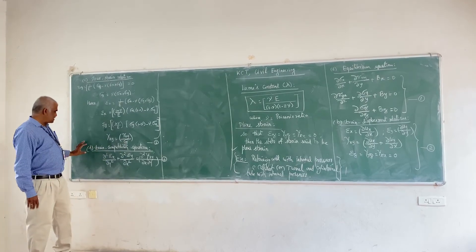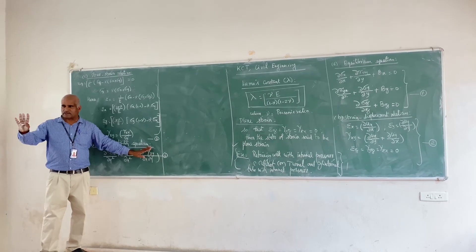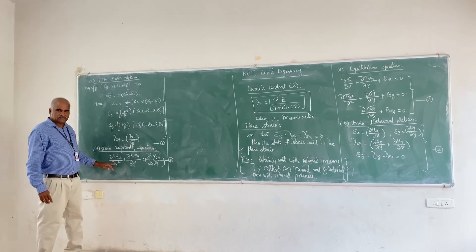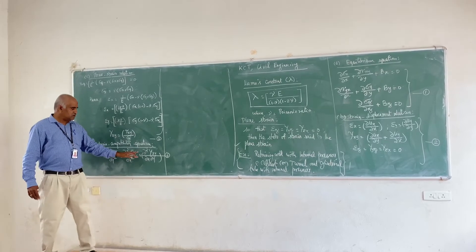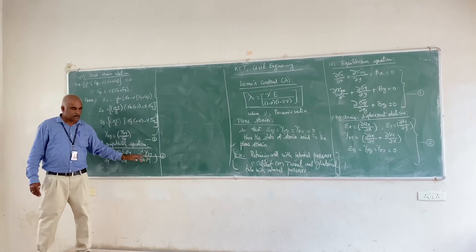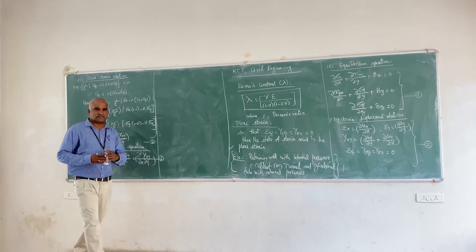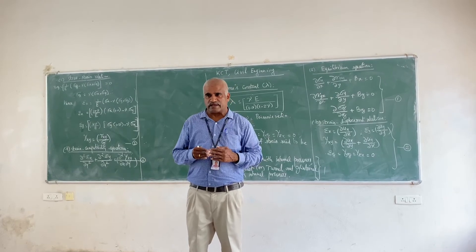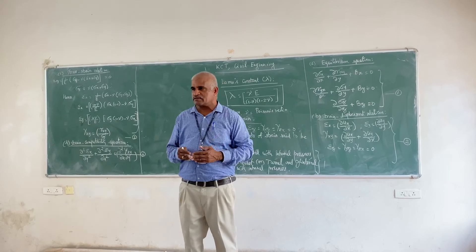Equation number 4 is the strain compatibility equation: (∂²epsilon_x/∂y²) + (∂²epsilon_y/∂x²) = (∂²gamma_xy/∂x·∂y). These are the four conditions — equilibrium equations, strain-displacement relations, stress-strain relations, and compatibility — for the plane strain case in advanced solid mechanics. Thank you very much for listening.